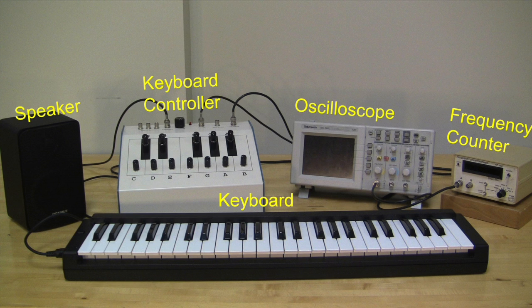In this lab, you'll use an electronic keyboard whose notes can be tuned to specific frequencies by using a keyboard controller. You will be able to hear the notes from the speaker and read off the frequency of the sound generated from the frequency counter. The oscilloscope will display the waveform of the signal generated from the keyboard.